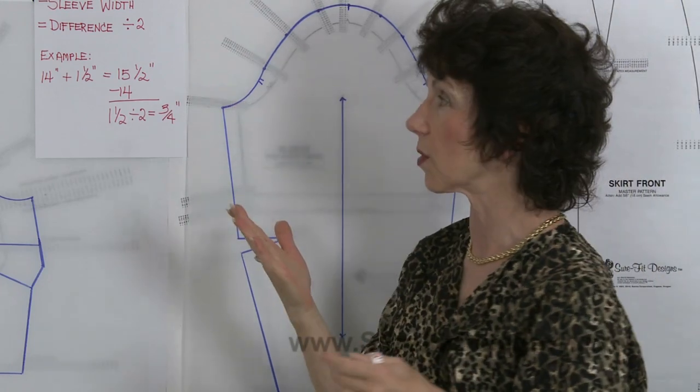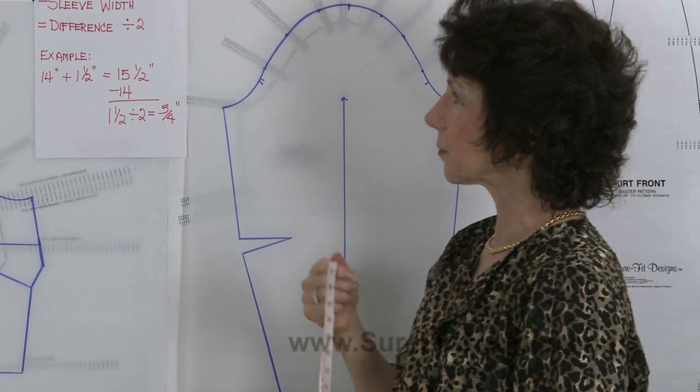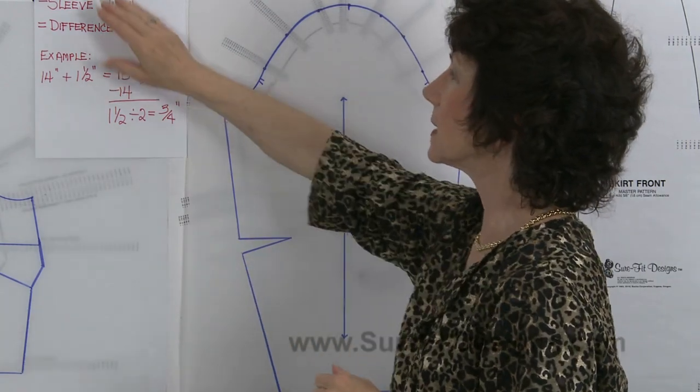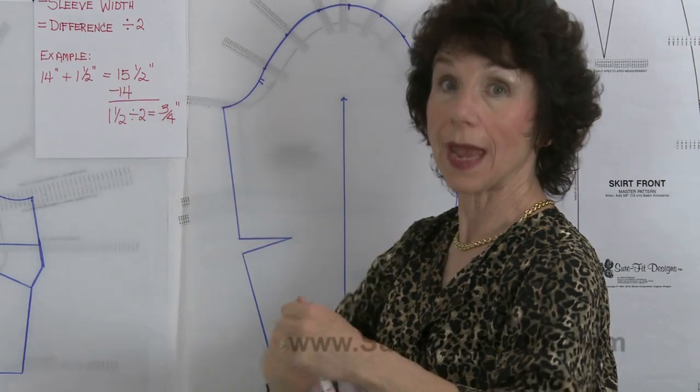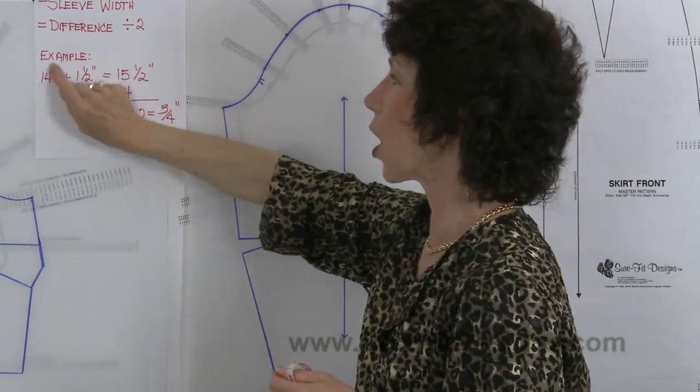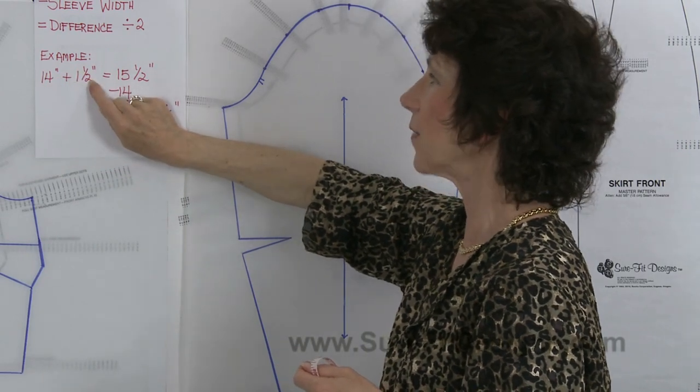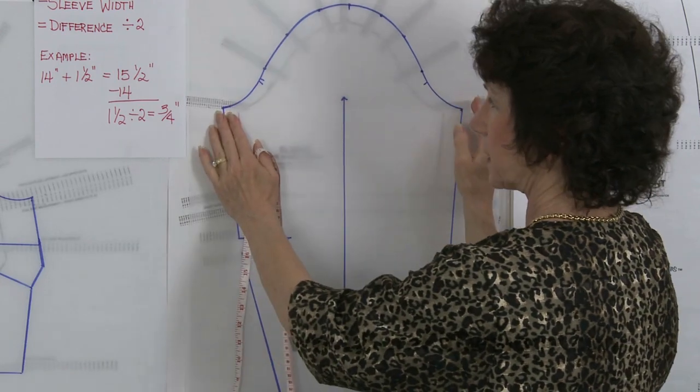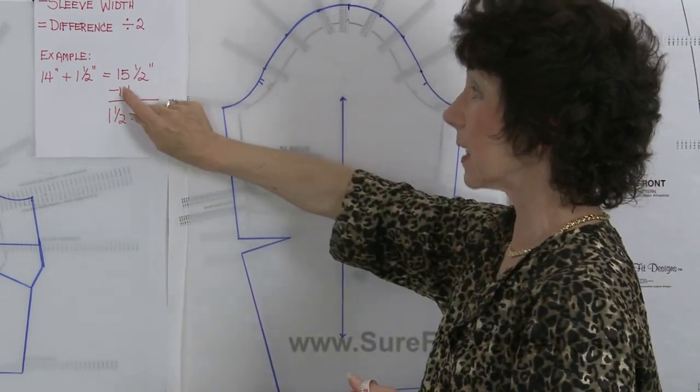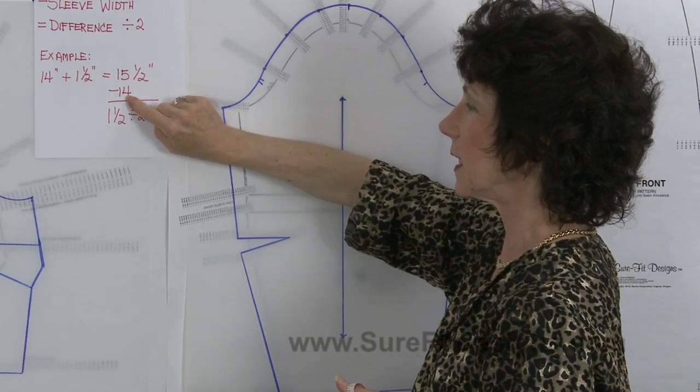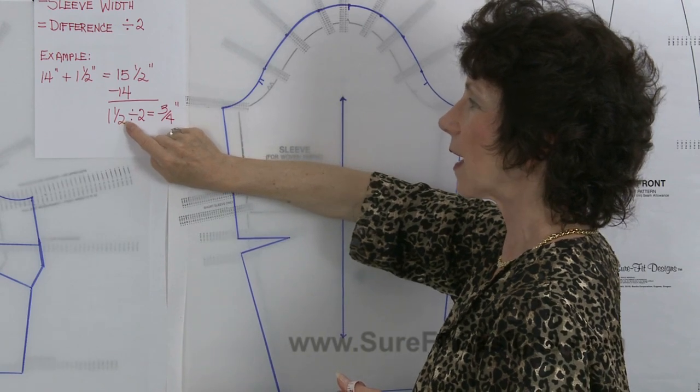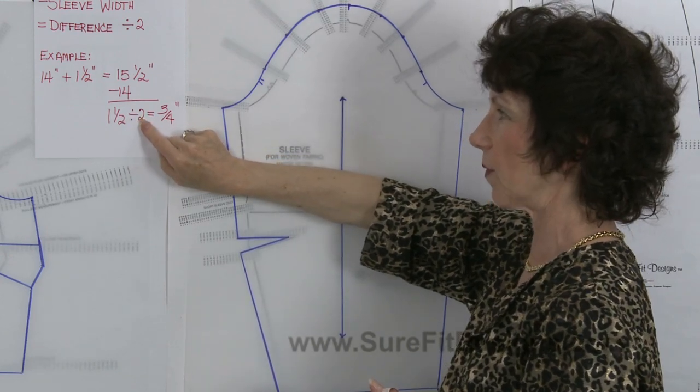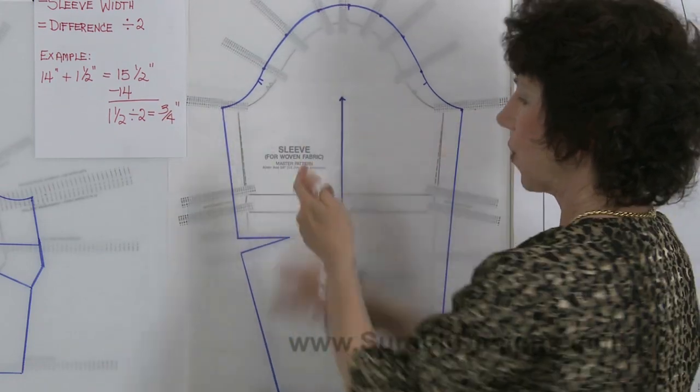We have 14 inches here to work with. Let's say that you have measured your arm and your arm plus ease - let's say your arm actually measures 14 inches around. You take your arm measurement plus an inch and a half of ease, and that means totally you would require 15 and a half inches all the way across. Well, the sleeve pattern is giving you 14 inches. If I subtract 14 from 15 and a half, it means I need to add an inch and a half.